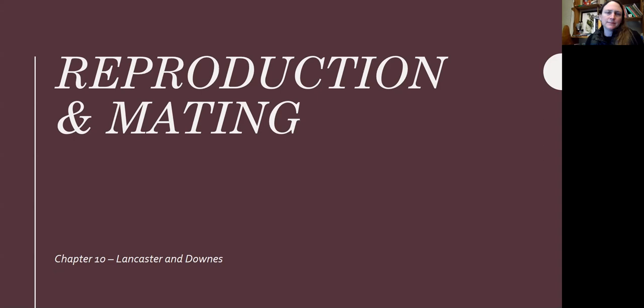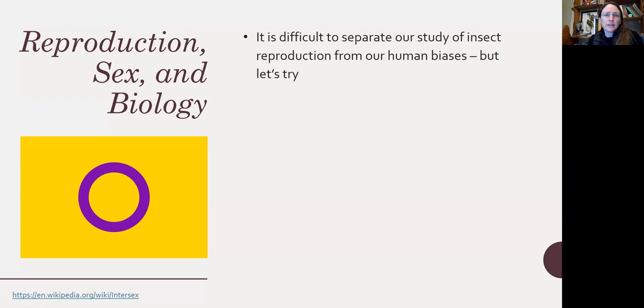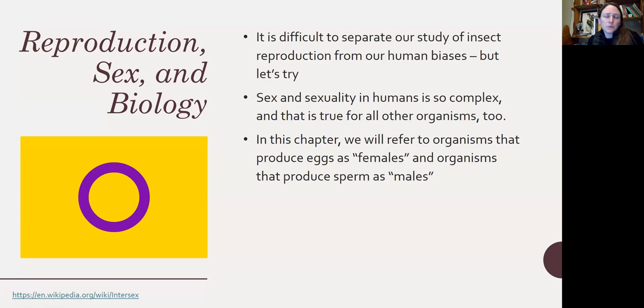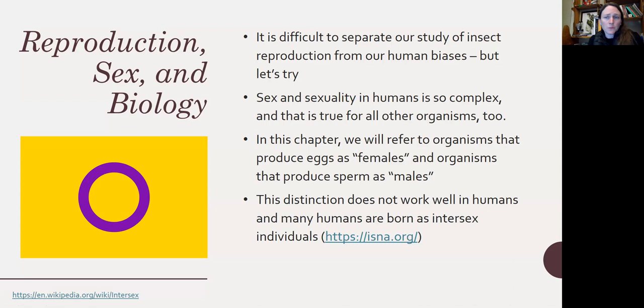Chapter 10 talks about reproduction and mating in insects, and we'll focus specifically on aquatic insects. It's difficult to separate our study of insect reproduction from our human biases, but we're going to try. Sex and sexuality in humans is very complex, and that's actually true for all other organisms too. In this chapter we will refer to organisms that produce eggs as females and organisms that produce sperm as males. That distinction does not work well in humans, and many humans are born as intersex individuals and can't be classified in either sex.